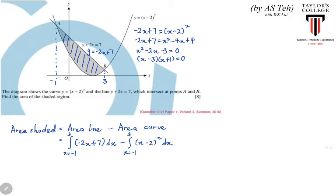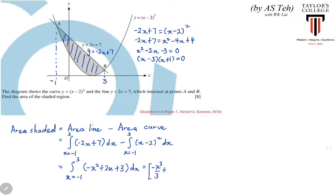Since both integrals share the same range from -1 to 3, we can combine them into a single integral. Subtracting the functions gives the integral from -1 to 3 of (-x² + 2x + 3) dx. Integrating: [-x³/3 + x² + 3x] evaluated from -1 to 3. Substituting the values correctly gives an area of 10⅔ square units.